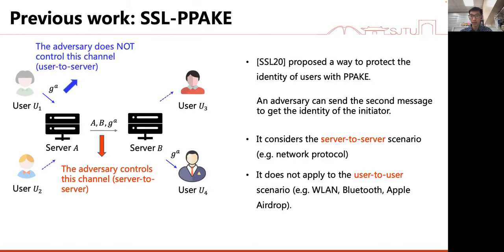To solve this problem, SSL20 proposed a way to protect the identity of users with PPAKE. It considers the server-to-server scenario. Both the initiator and responder are agent servers, and behind each agent server there are many users. The adversary controls the server-to-server channel but does not control the user-to-server channel. Anonymity in this scenario requires the adversary cannot distinguish which user sits behind the agent server.